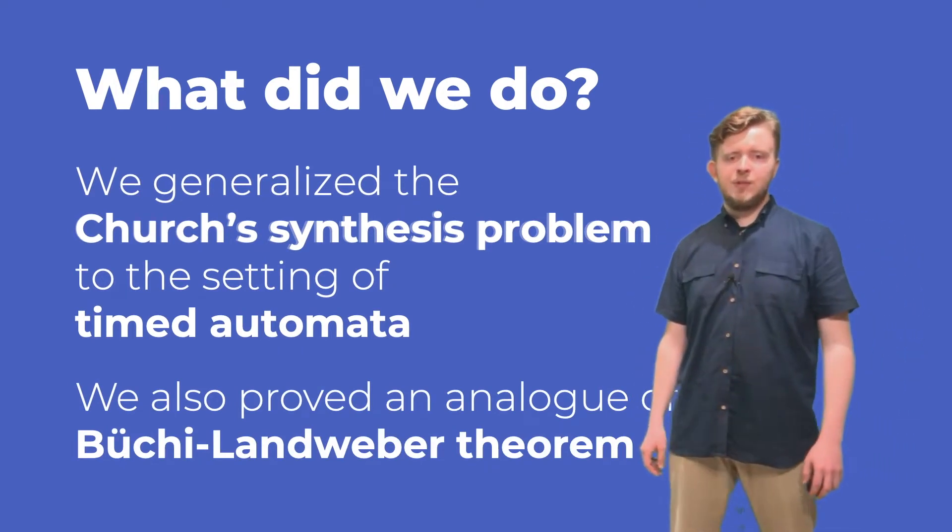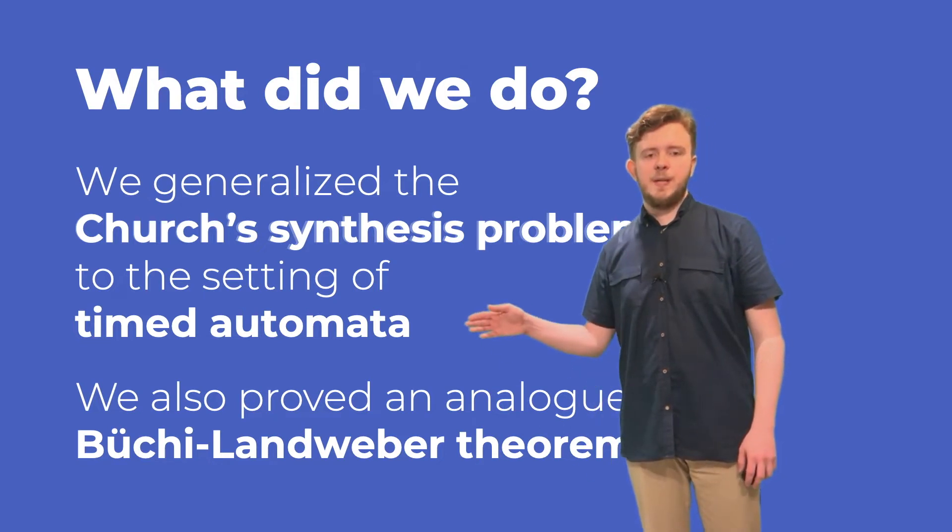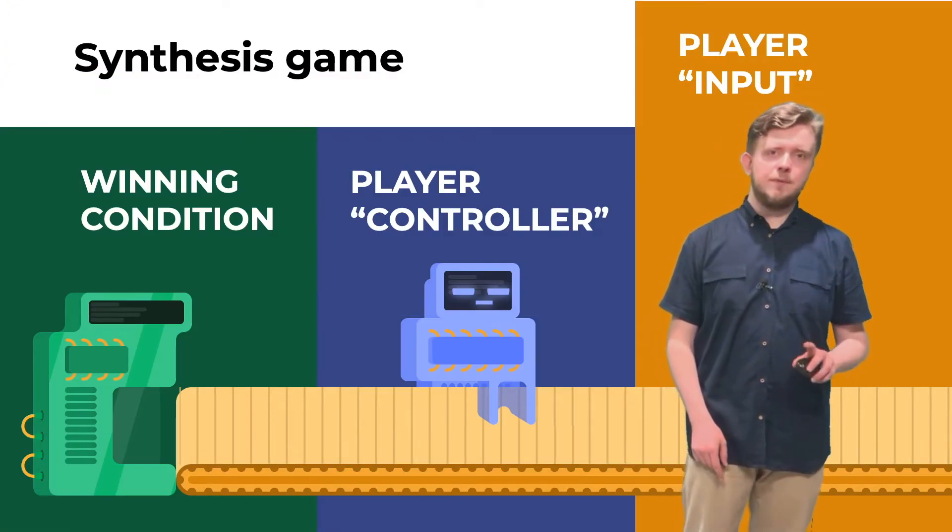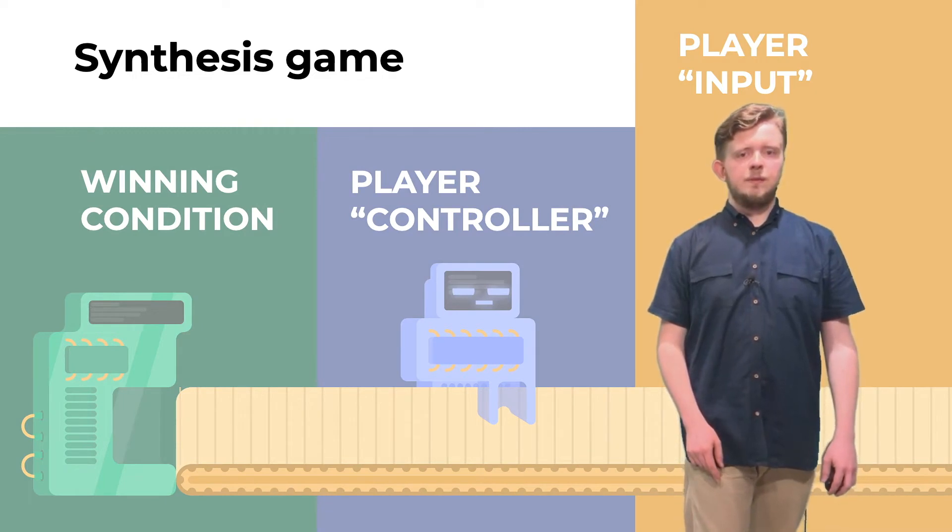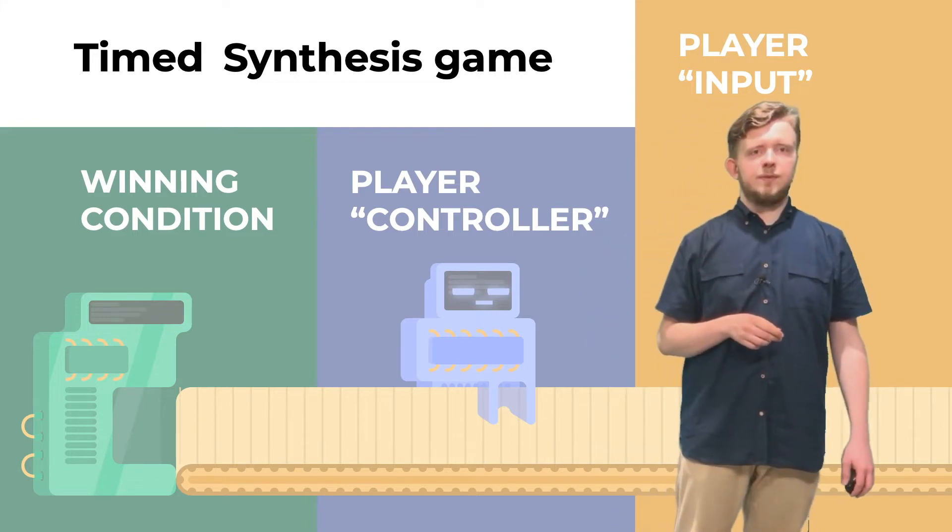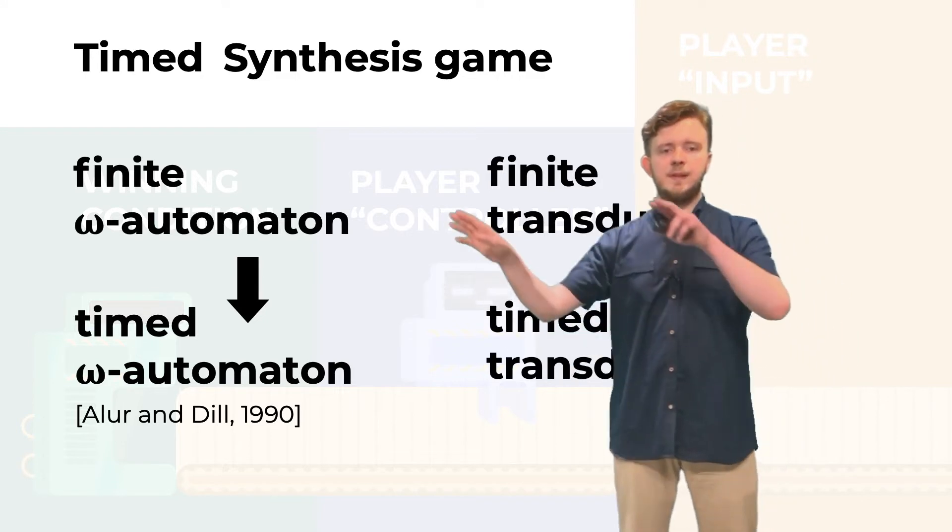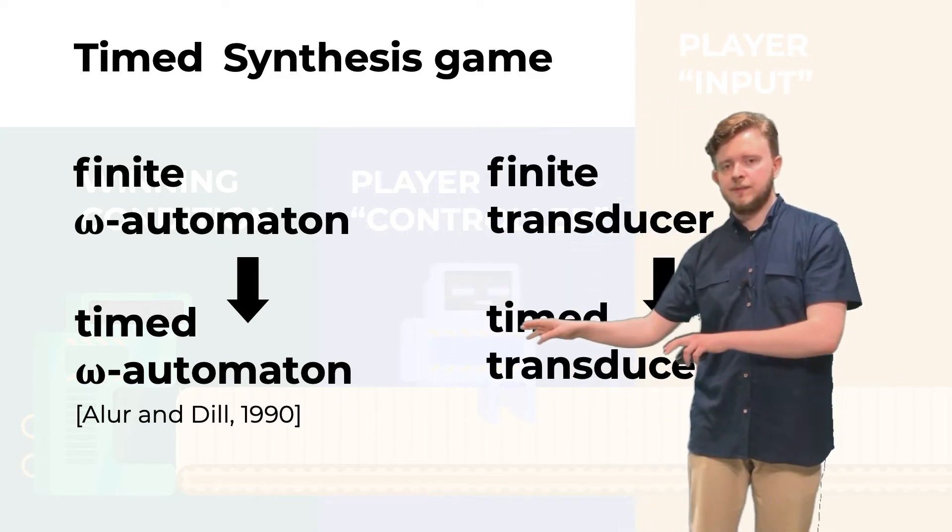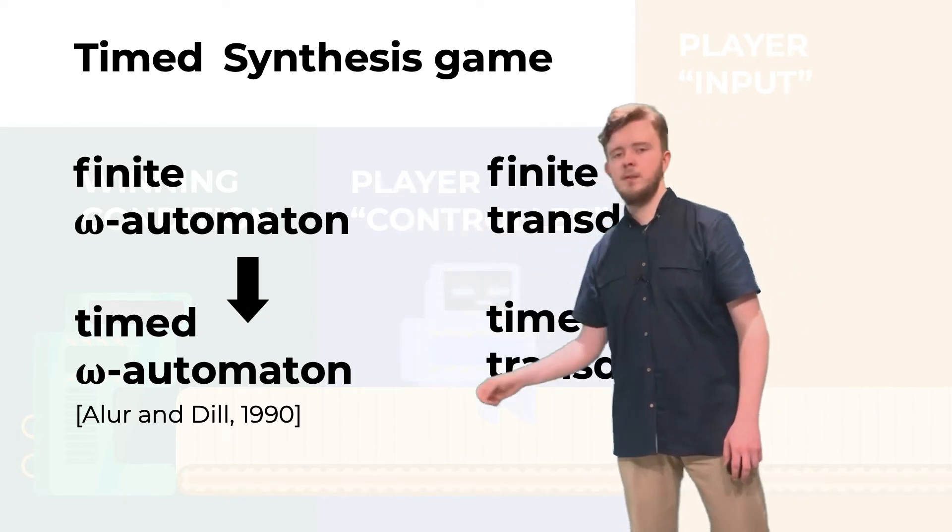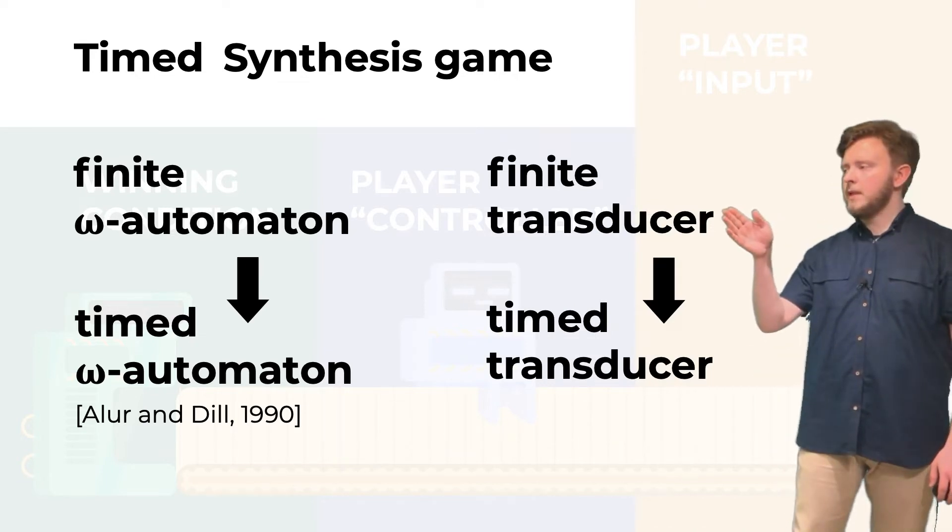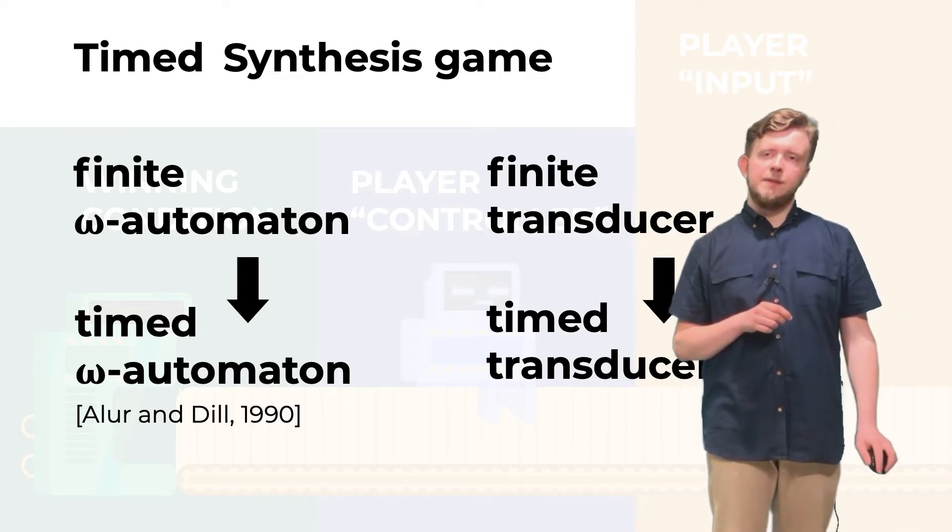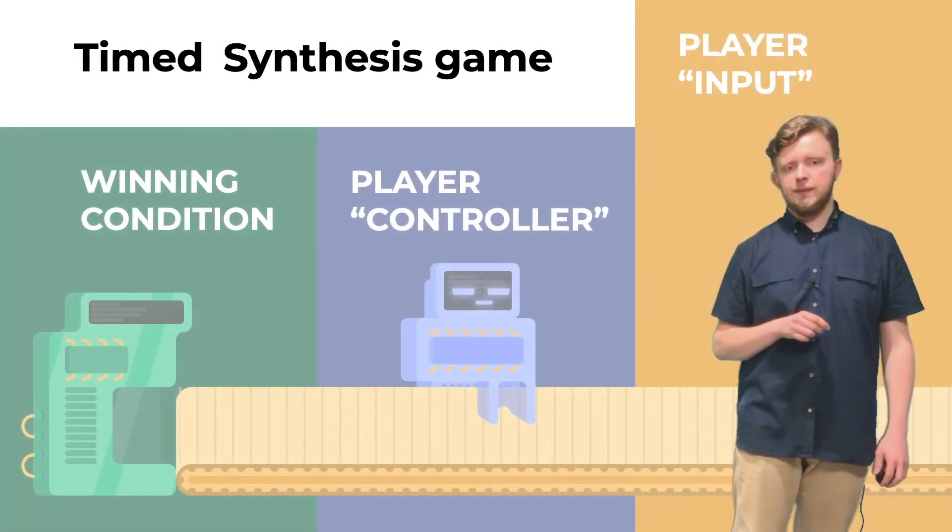So now let me show you how we generalize our pipeline to the world of timed automata. For those of you who know timed automata, our derivation of timed synthesis game should be quite straightforward. We just replace the models here with the timed counterparts. So a finite Omega automaton here is replaced with a timed Omega automaton. And also a finite transducer is replaced with a timed transducer. If you don't know timed automata, don't worry. The change is actually very easy. We do that in three steps.